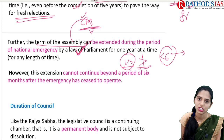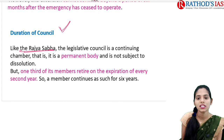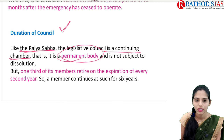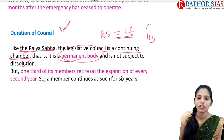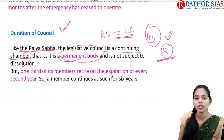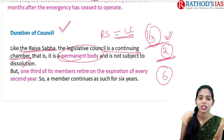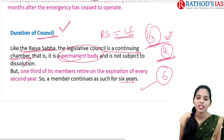Regarding the duration of the Legislative Council: like Rajya Sabha, the Legislative Council is a continuing chamber and a permanent body, not subject to dissolution. One-third of the members retire after expiration of every 2 years. In this way, the tenure of members of the Legislative Council is 6 years. These are some important points you should remember regarding this topic.